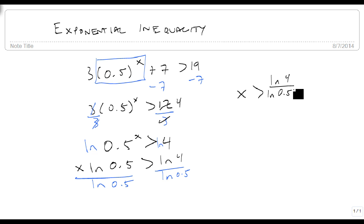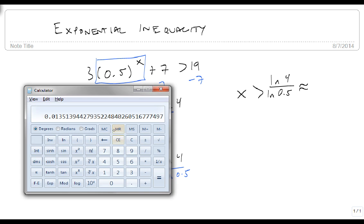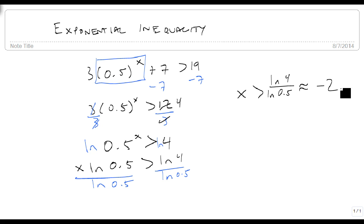What this doesn't help us do is we don't know what that is approximately. So we get out our calculator again, and we do 4 natural log divided by 0.5 natural log. That's approximately equal to negative 2, or it actually is exactly equal to negative 2 in this case.